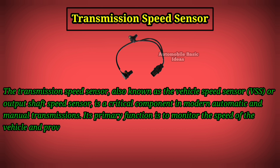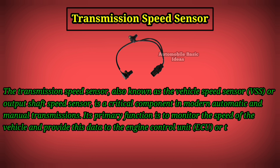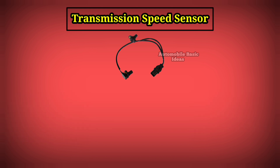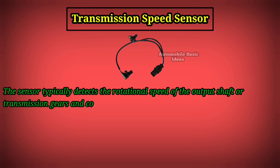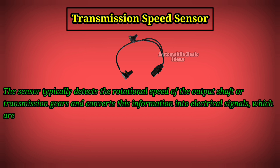The sensor typically detects the rotational speed of the output shaft or transmission gears and converts this information into electrical signals, which are then used by the vehicle's onboard computer systems for various functions.